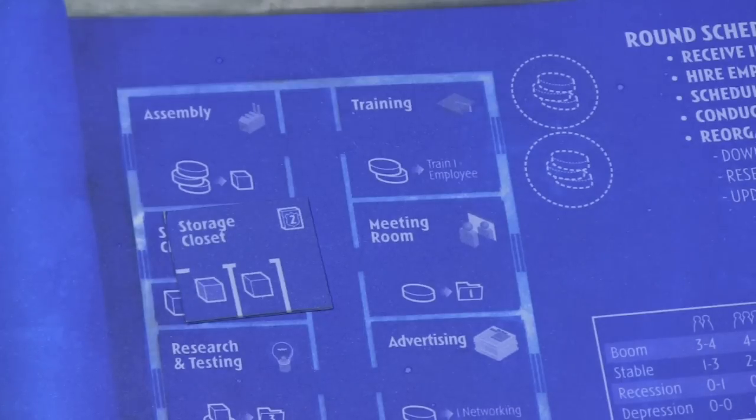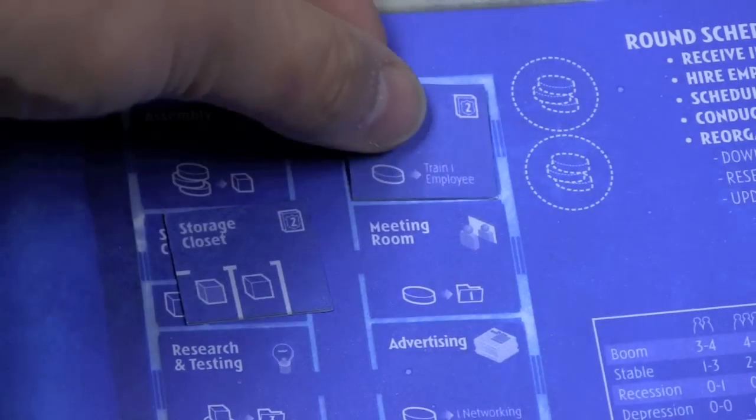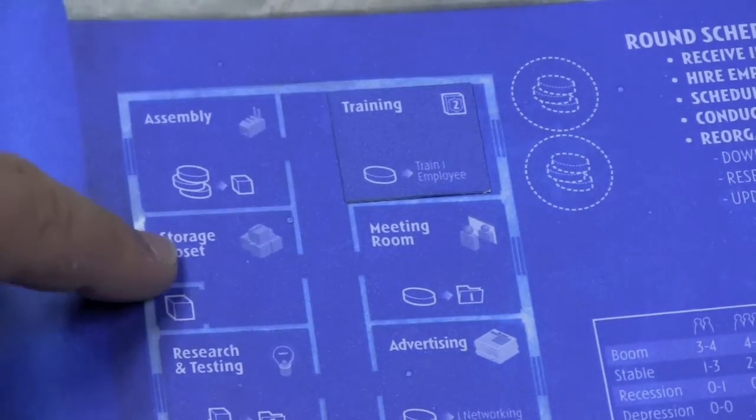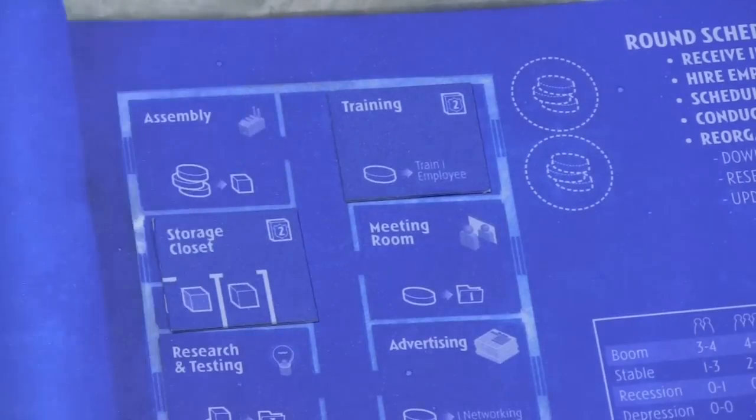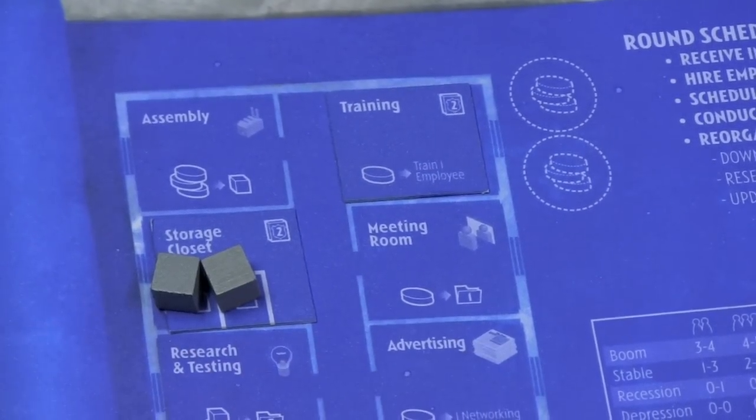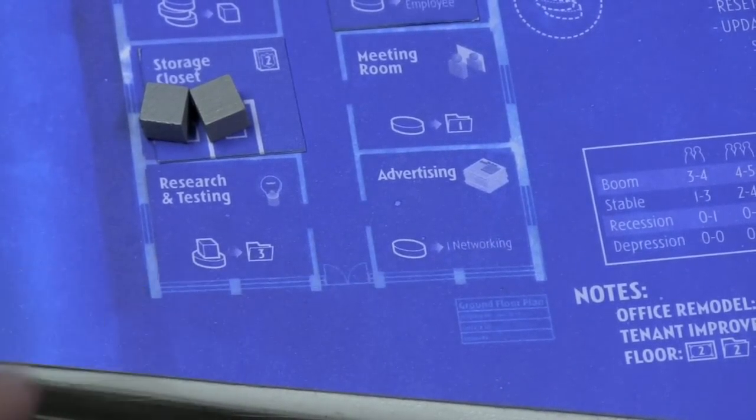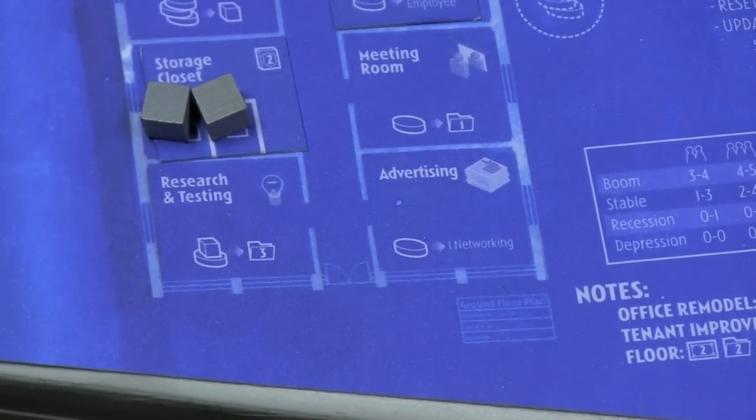Or I can trade in two discs to train someone and add another employee. But the upgraded version of every room, so for example here, instead of trading in two discs, now I only trade in one disc. The storage closet actually isn't a special ability. It's just you can keep one cube there. But once I have the storage closet upgraded version, I can have two cubes. I can trade a disc in for information. I can trade a disc in for networking. I can trade in a disc and a cube to get three information for researching and testing. And those are different things that I can do. And again, they can be upgraded.